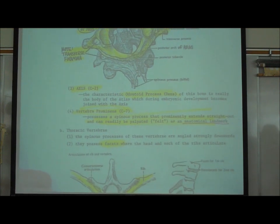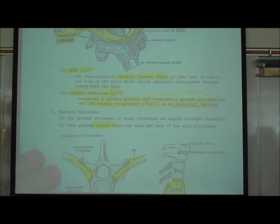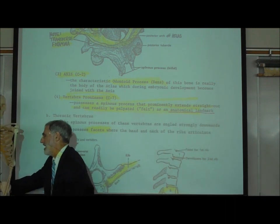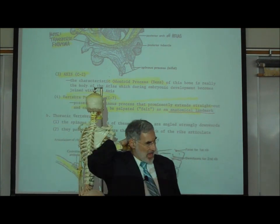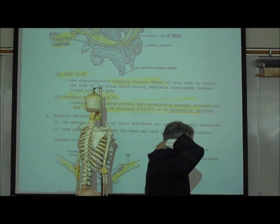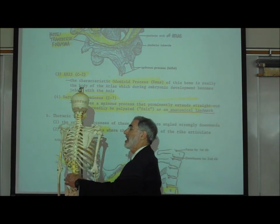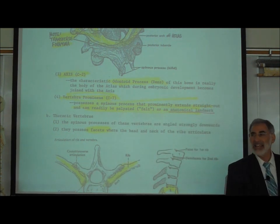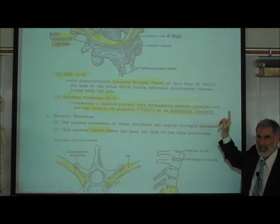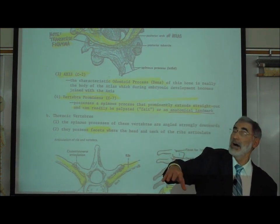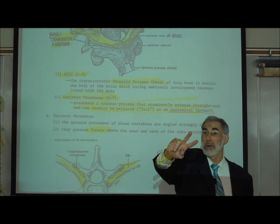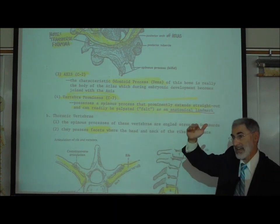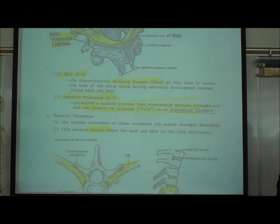One more cervical vertebra to know is the seventh cervical vertebra. If you feel the back of your neck, you'll feel a bump or spine toward the lower part — that is the spinous process of C7, sometimes called vertebra prominens because it's prominent and serves as an anatomical landmark. Once you feel that bump, counting two spines below it reaches T2, which marks the top of the heart from the backside.